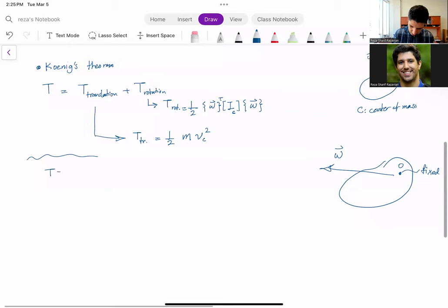And now the body rotates somehow with some angular velocity omega about that fixed point. In this case, t is one half omega transpose, now i about point O times omega. Similar to the case we had before, it was a moment of inertia about a fixed point times the angular velocity squared.